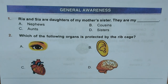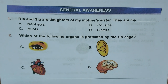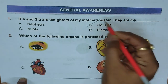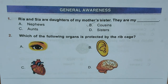Let us start with the first question for today's session. General Awareness, Question 1: Rhea and Sia are daughters of my mother's sister. They are my — A. Nephews, B. Cousins, C. Aunt, D. Sisters. The correct answer is B, Cousins. Question 2: Which of the following organs is protected by the rib cage? A. Eye, B. Ear, C. Heart, D. Brain. Correct answer is C, Heart.